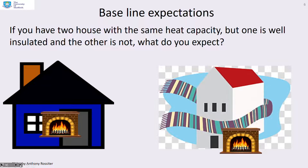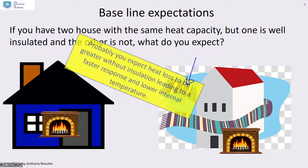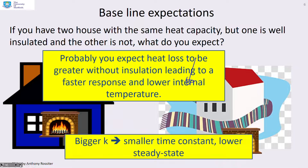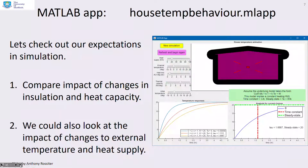If you've got two houses with the same heat capacity but one is well insulated — you can see the one on the right has a scarf around it to indicate very good insulation — you'd expect heat loss to be greater without insulation, leading to a faster response and a lower internal temperature. So if k gets bigger, you expect a smaller time constant and lower steady state. We're going to check these expectations in simulation by comparing the impact of changes in insulation, heat capacity, and other parameters.